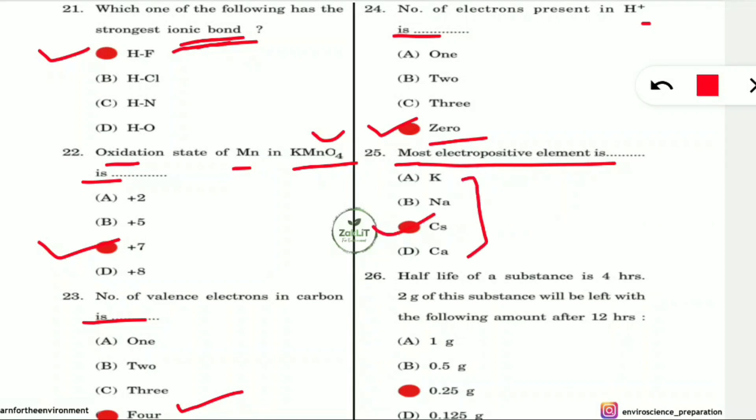Question 25: What is the most electropositive element among the options? Among the given options, cesium is the most electropositive element.